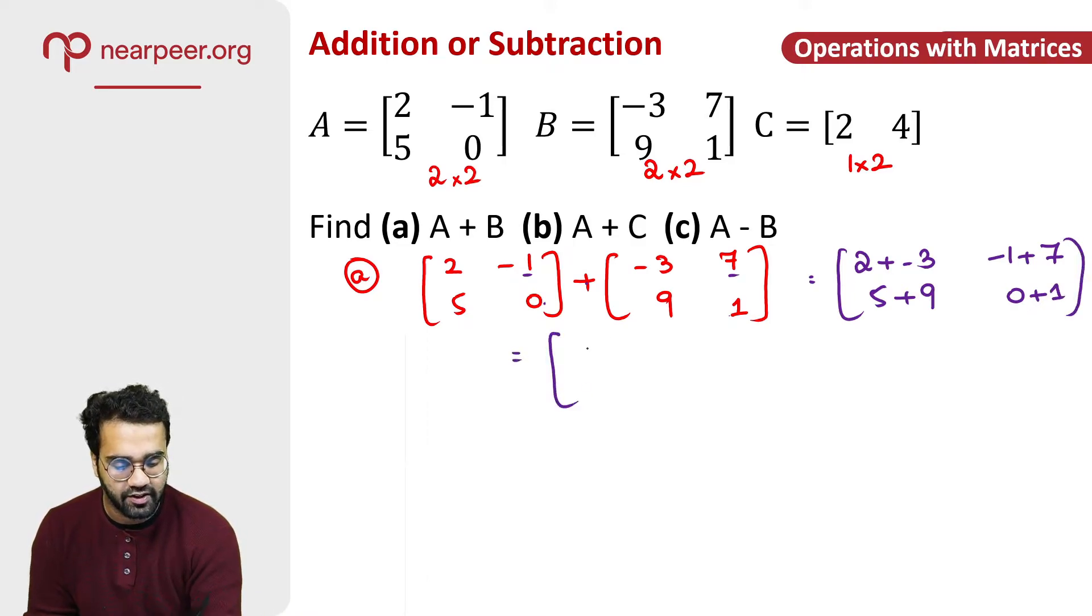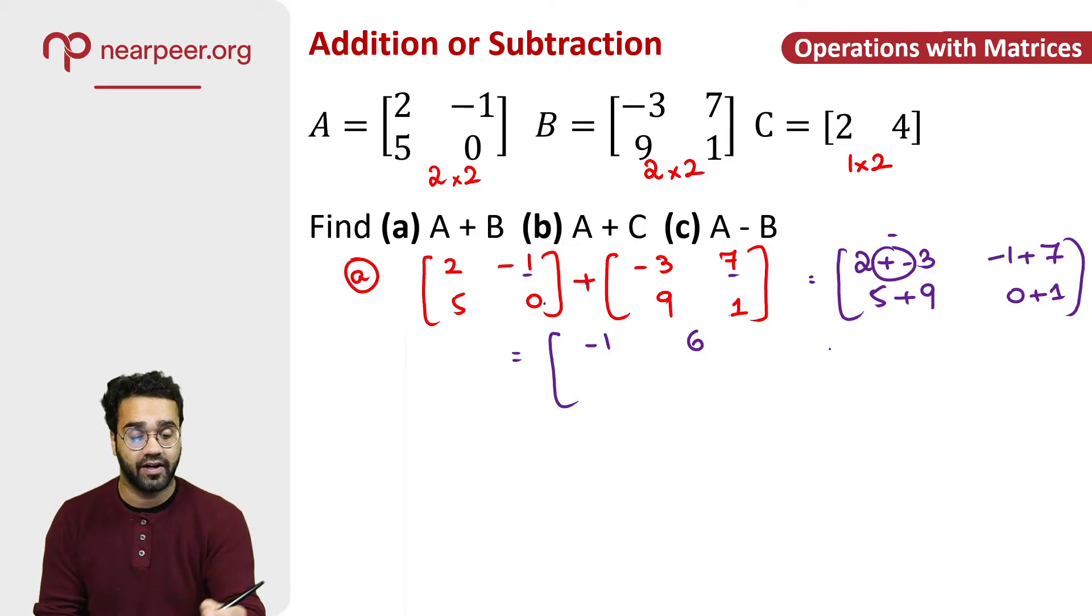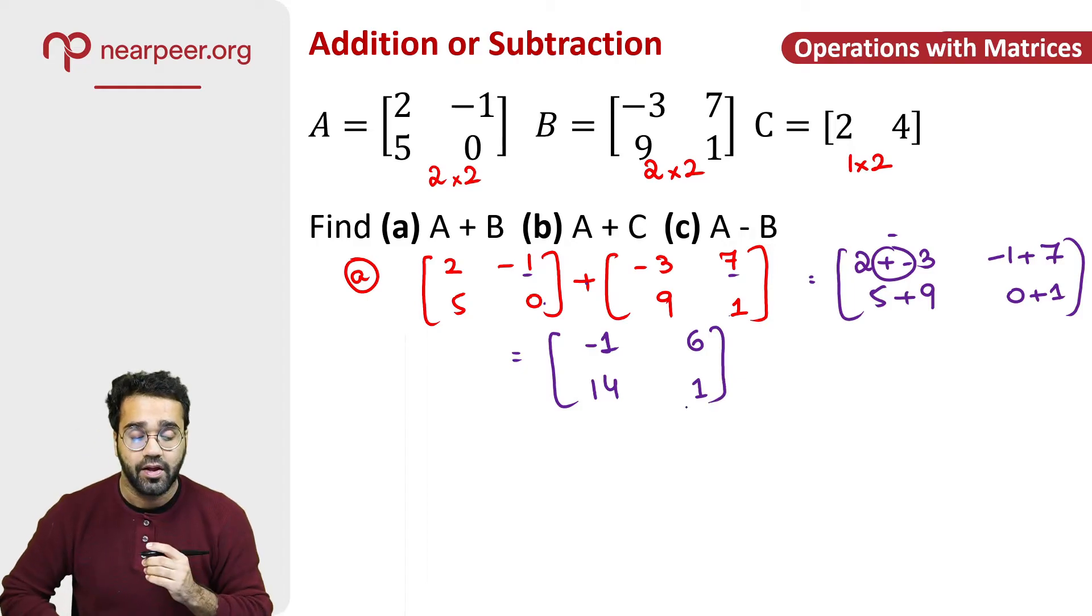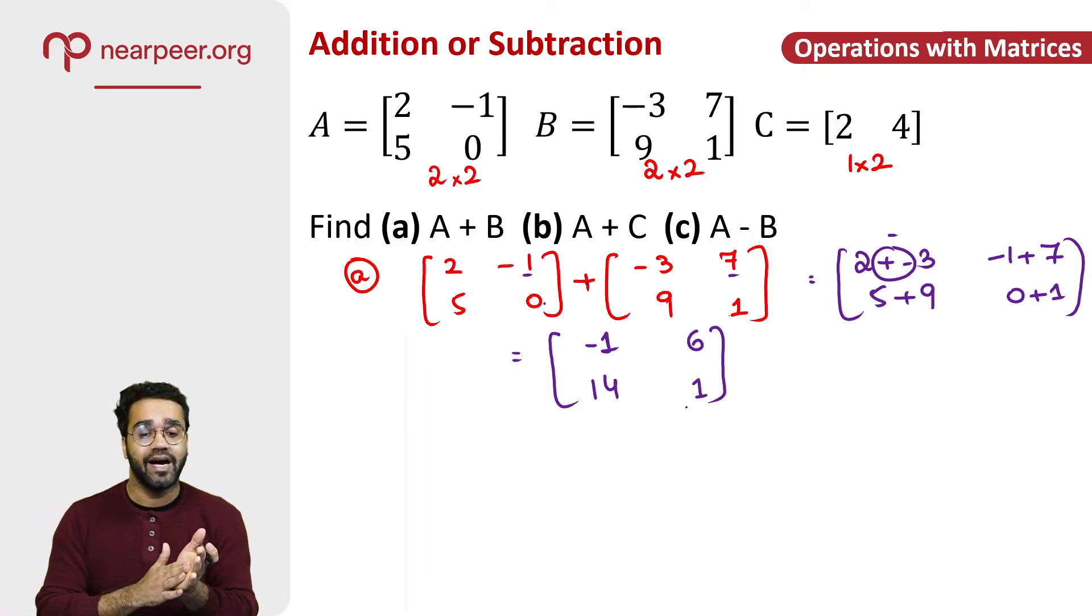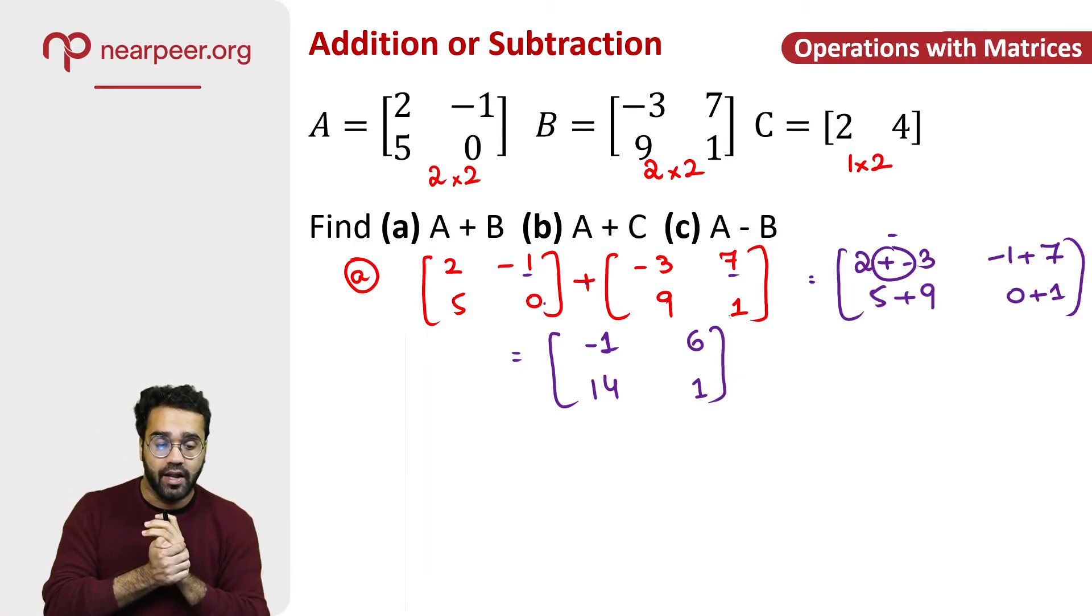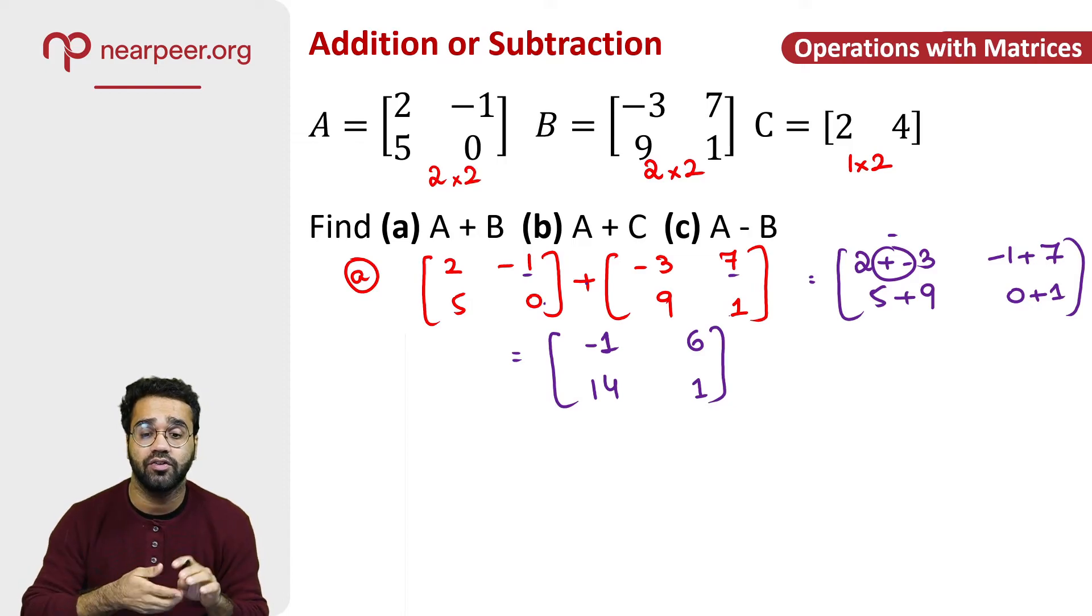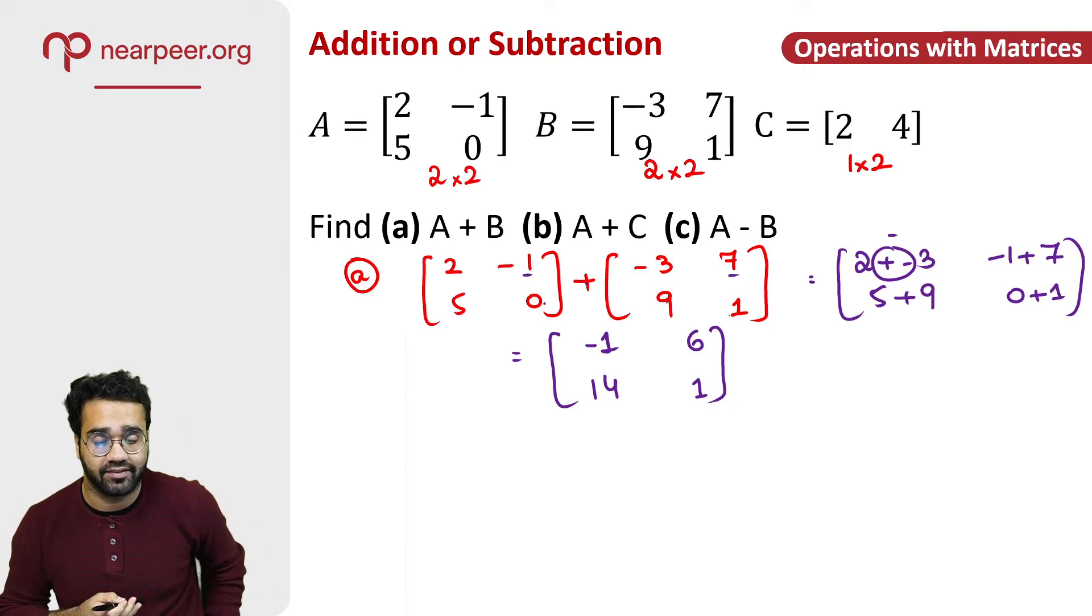2 plus minus 3 this becomes minus, 2 minus 3 is minus 1, minus 1 plus 7 is positive 6, 9 plus 5 is 14, 0 plus 1 is 1. So this is how you add the two matrices. Now, one thing to note here is when you're adding or subtracting matrices, you need to have the same order and the answer that you get also needs to have the same order as the matrices.